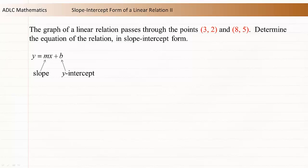We know the graph of the relation includes the points (3, 2) and (8, 5). We can substitute the coordinates of these two points into the slope formula to determine the slope of the line. The slope of the line is equal to (y₂ - y₁) / (x₂ - x₁). Substitute the coordinates of the two points into the formula and evaluate. The slope is 3/5.